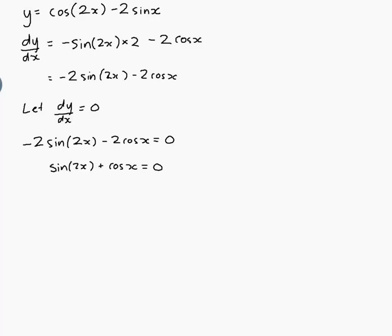Well I suppose I could get sin(2x) equals minus cos(x) but I've got no idea how to solve that. Maybe I should expand out the sin(2x). 2sin(x)cos(x) plus cos(x) equals 0. Well that means now I can take out a cos(x). So cos(x) times (2sin(x) plus 1) equals 0.